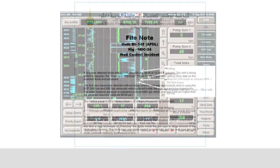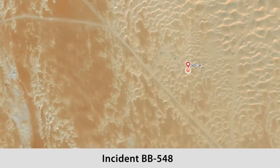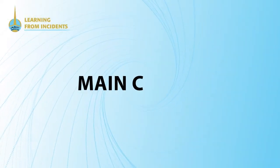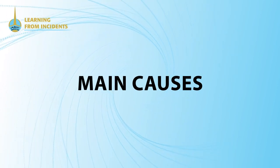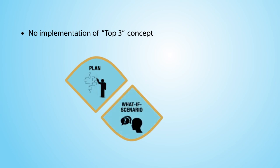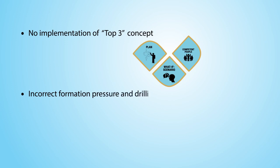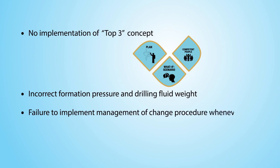After reviewing the primary and secondary well control barriers, the main causes behind ADCO's major well control incidents are: no implementation of the top 3 concept plan; lack of competent people; incorrect formation pressure and drilling fluid weight calculations; failure to implement the management of change procedure whenever changes occur; and failure to maintain BOP equipment.